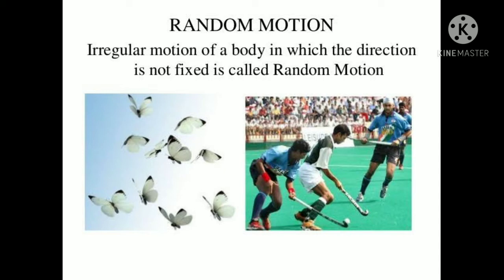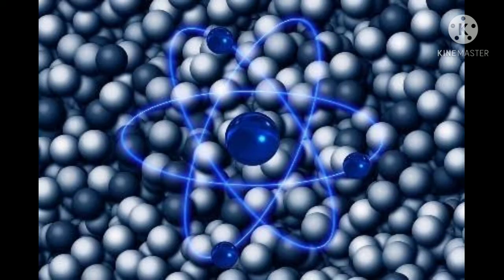Random motion is the irregular motion of a body in which the direction is not fixed. For example, butterflies flying have no fixed path — they just go freely. Even players in a field change direction unpredictably, like a hockey player chasing the ball with a hockey stick.